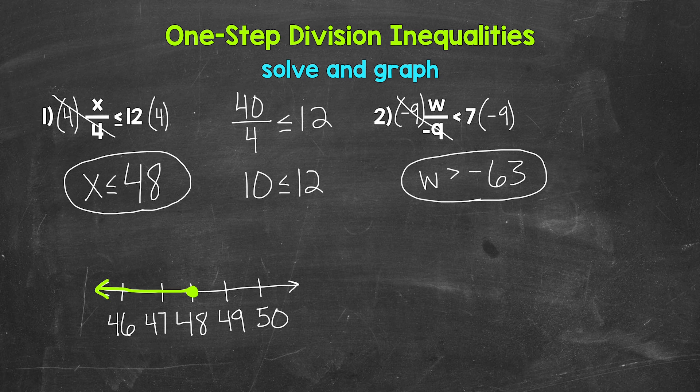So W can be anything greater than negative 63. As far as flipping the inequality symbol, that symbol flips as soon as both sides are multiplied by negative 9 — basically, it flips in order to keep the inequality true. I go into more detail about this in other videos; those links are in the description. Here we're just going to focus on solving and graphing. Our answer: W is greater than negative 63.